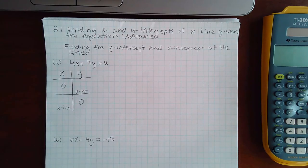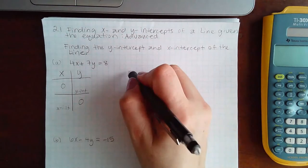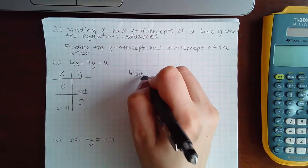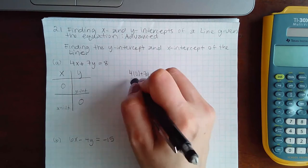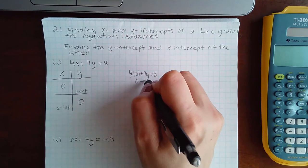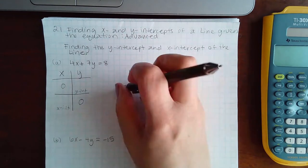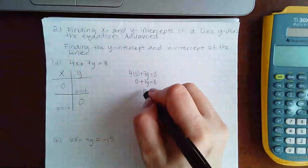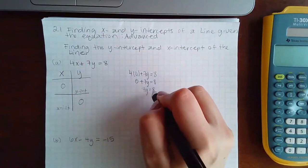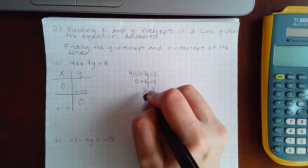The only thing different is that you might end up with fractions in this advanced topic. So if I plug in zero for x, I end up with zero plus seven y equals eight, or just positive seven y equals eight.